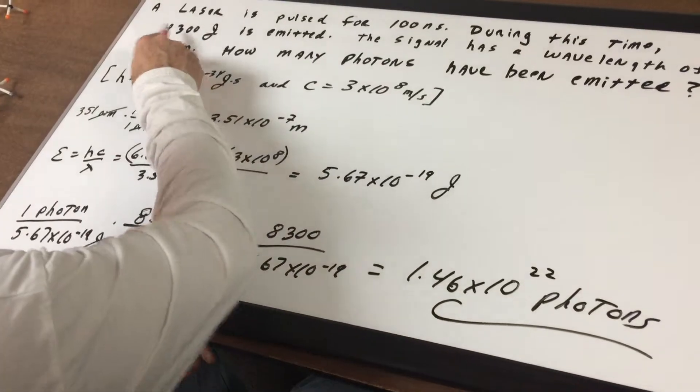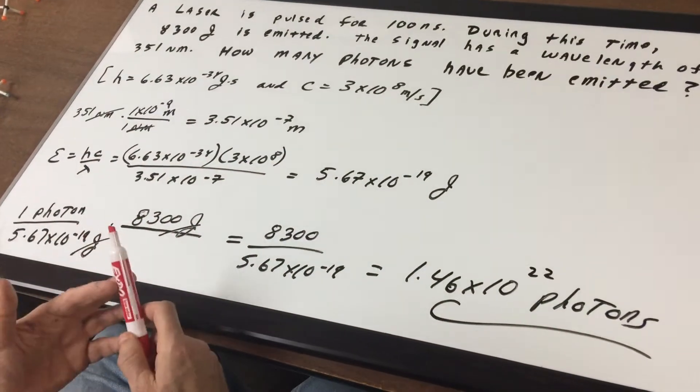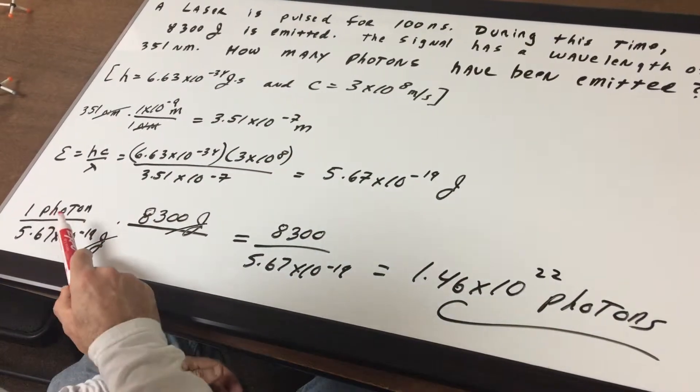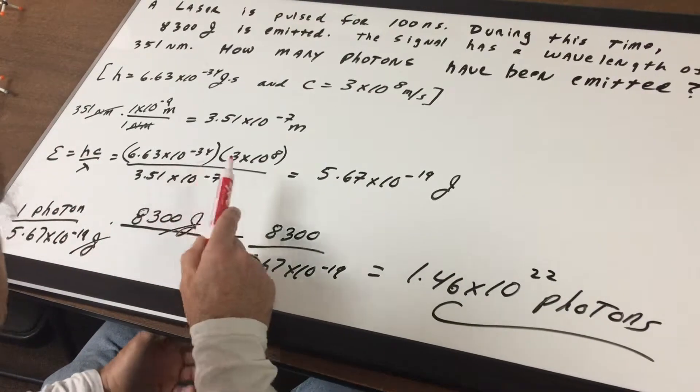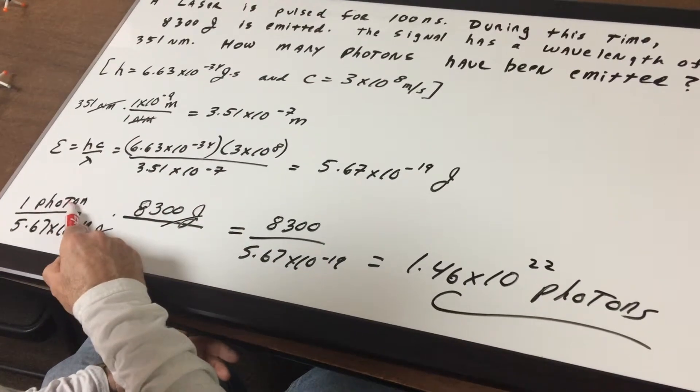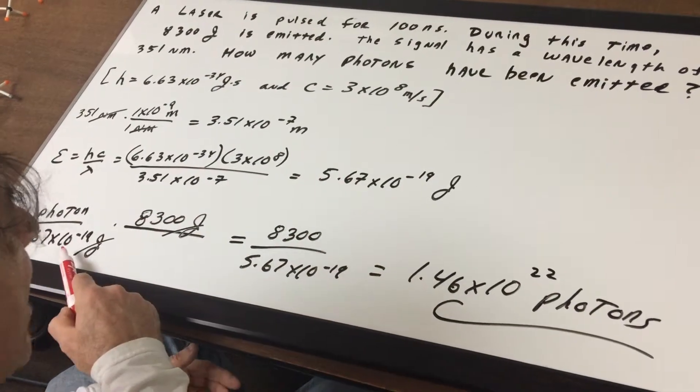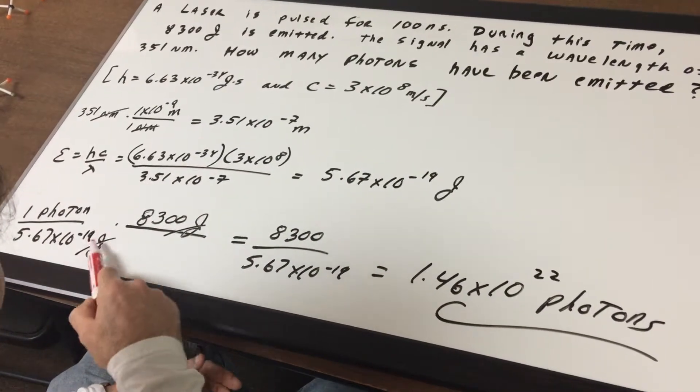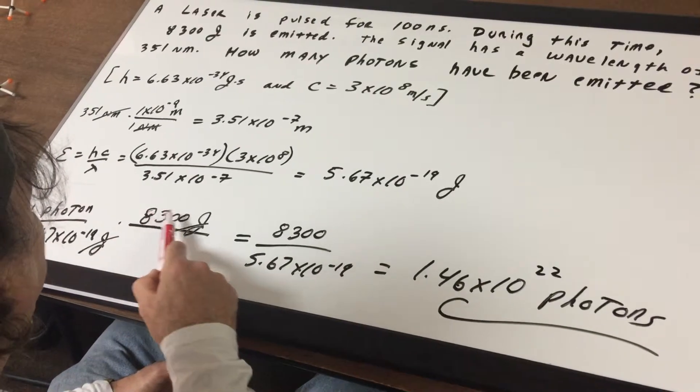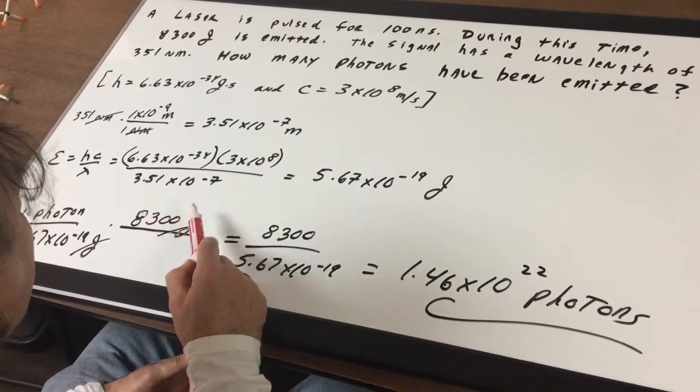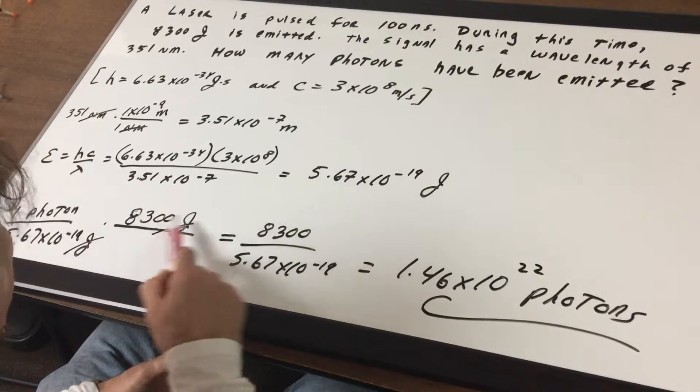Now we know the total energy is 8300 joules, so what we got to do is, since we want the answer in photons, we're going to have photon at the top. One photon is equivalent to 5.67 times 10 to the minus 19 joules. If I multiplied it by the total energy, which is 8300 joules, notice the word joules cancels out.